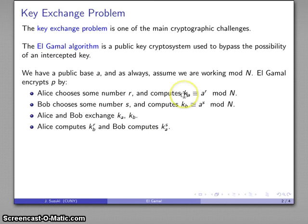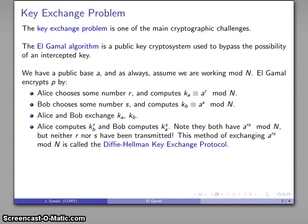And the thing to note here is that when they do that, when Alice raises Bob's number to her exponent, she gets a to power r·s. And when Bob raises Alice's number to his exponent, he also gets a to power r·s. And so both of them now have this secret number, a to power r·s mod N, even though neither one has ever communicated what that value is.